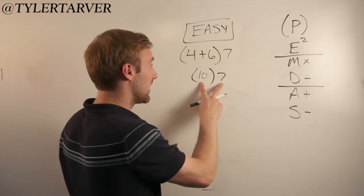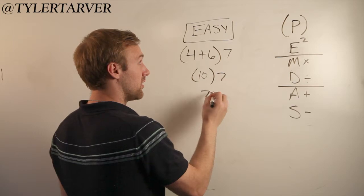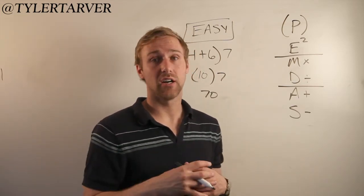Our next thing is we've only got one operation left and that's multiplication, because when you have parentheses there and the number next to it, it's multiply. So 70, and that's your answer. That's an easy version of order of operations.